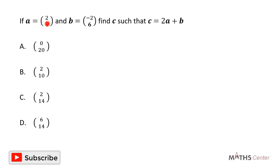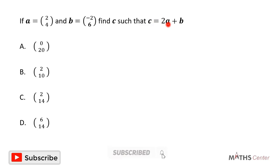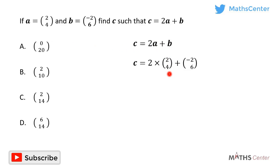If vector A has the components (2, 4) and vector B has the components (-2, 6), find vector C such that vector C equals 2A plus B. This is a multiple choice question. Vector C equals 2A plus B, and we have the components of A and B, so we can substitute them to get the components of vector C.